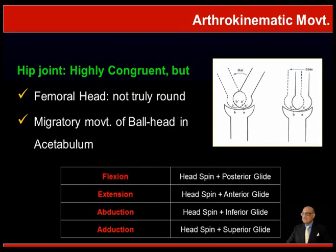The hip joint is a highly congruent joint, but we know that the femoral head is not truly round. There is a migratory movement of the femoral head in the acetabulum in varying degrees of flexion, extension, abduction, and adduction. The head basically spins in all these movements and glides posteriorly or anteriorly depending on the arc of movement.